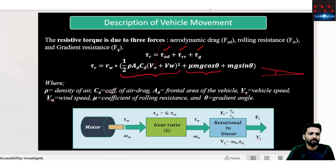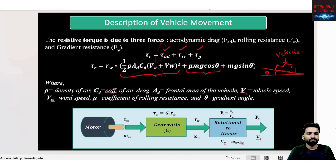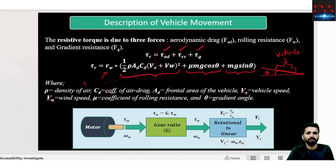Maybe the road is inclined — theta is the angle and this represents your vehicle. The third component is mg × sin(theta), the gradient component. All three forces, when multiplied with the radius of the tyre, give the tyre torque — the torque required at the tyre to move the vehicle.